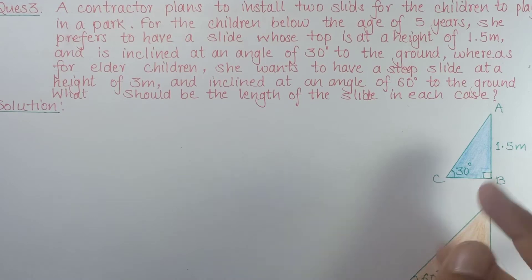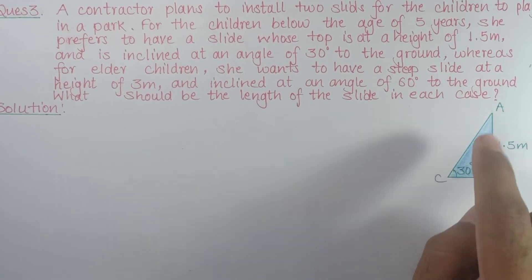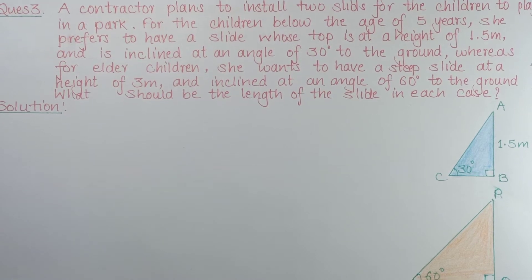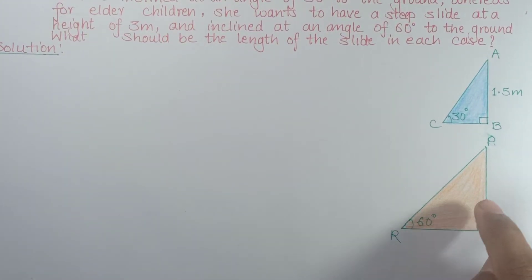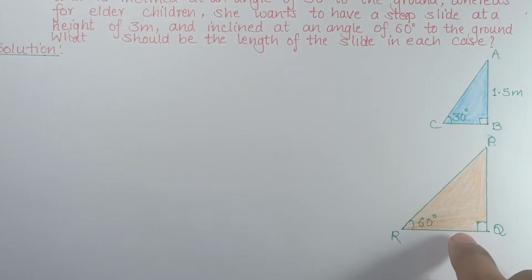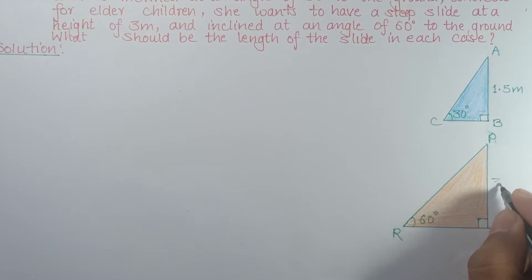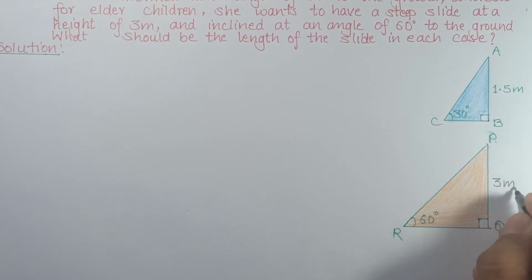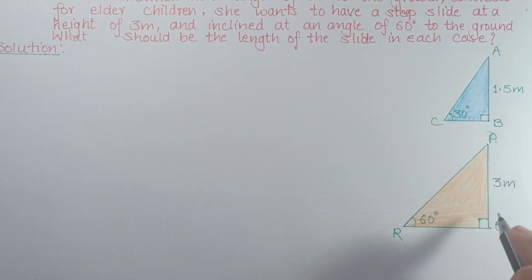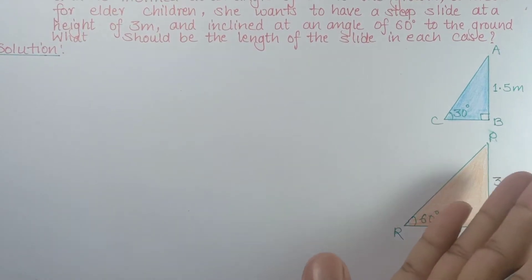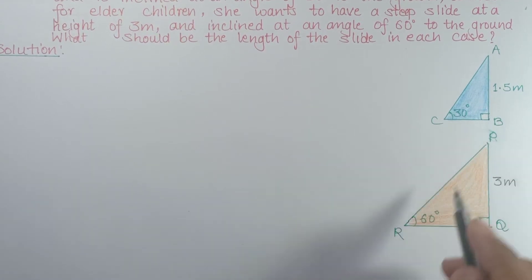In the first case, the height is 1.5 meters and the angle of inclination is 30 degrees. In the second case, the height is 3 meters and the angle of inclination is 60 degrees.